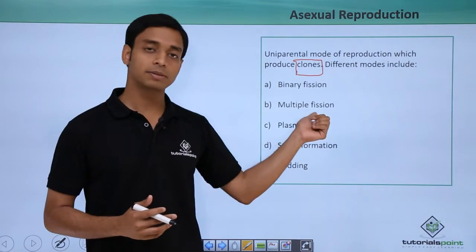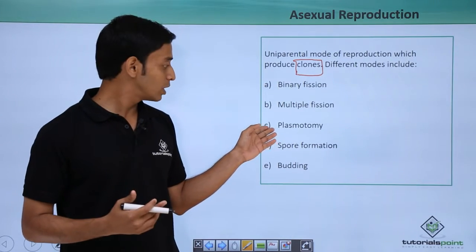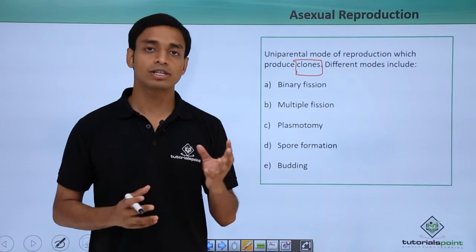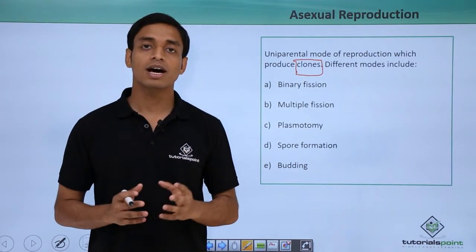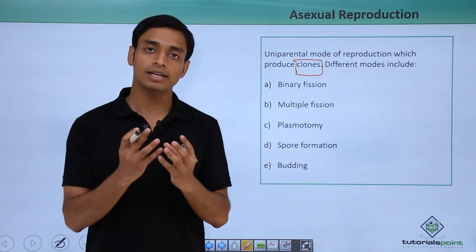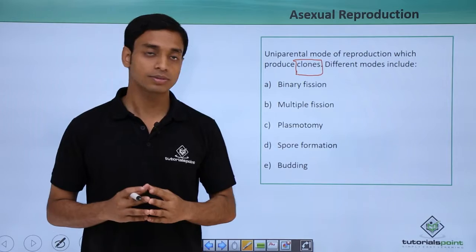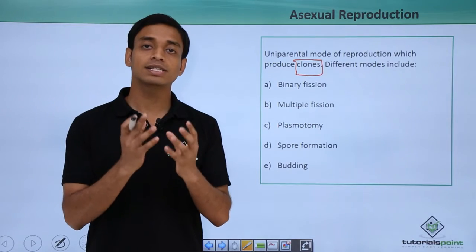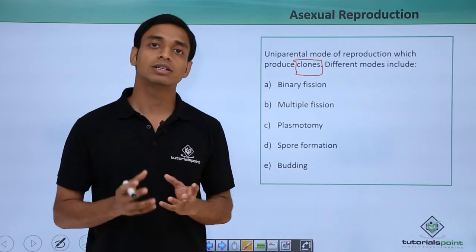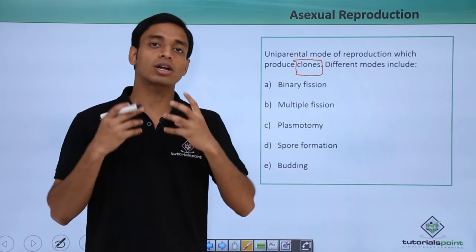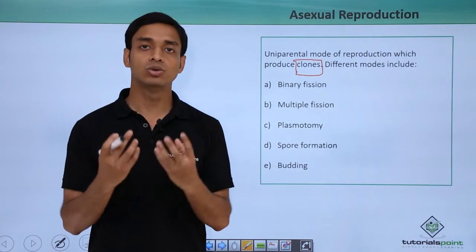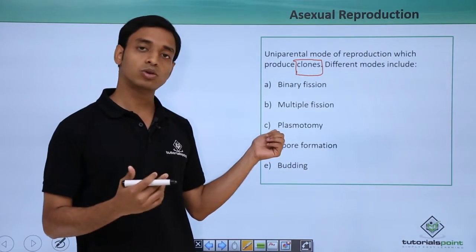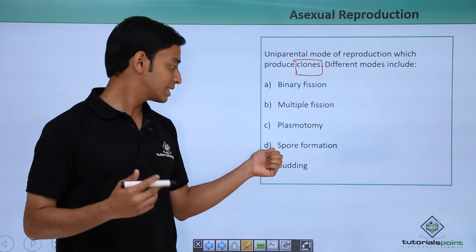The next type is known as plasmotomy. Here the organisms are multi-nucleated, meaning a single organism has more than one nucleus. When the cell divides, cytoplasmic division occurs without division of the nucleus. Hence the new organisms developing will also be multi-nucleated. This mode is known as plasmotomy.